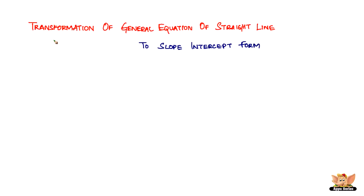In this video, let us look into the transformation of the general equation of a straight line to the slope-intercept form. Before we start, let us first take a look at what exactly is the general equation of the straight line.